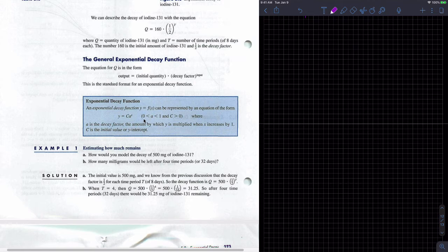And so, as I said, A, our base is going to be between zero and one. Our C is going to be greater than zero, meaning it's going to be above. It's not going to be some negative amount, because how could you have a negative amount of something? And so, A is called the decay factor.